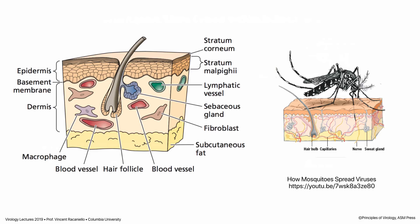The biggest organ in your body is your skin, and it is a great defense against virus infection. The epidermis is the outer layer, and the top layer of the epidermis is dead — viruses cannot infect it. Viruses that land on your skin, if it's not broken, will not be able to infect because the cells are dead. That's a great defense lining your entire skin. Of course, many of us have broken skin, so viruses can get in that way.